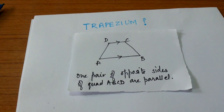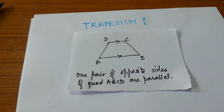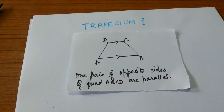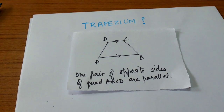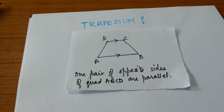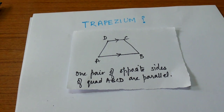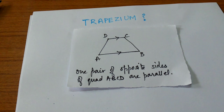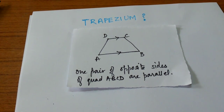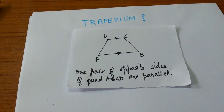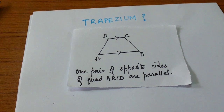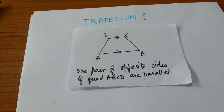In this diagram, ABCD is a trapezium. Observe: AB is parallel to CD. So one pair of opposite sides of ABCD is parallel to each other. Therefore, ABCD is a trapezium.